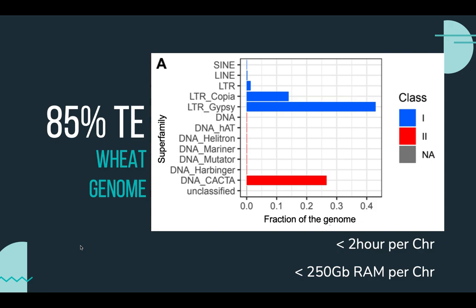This genome is important for us because it has 85% transposable elements. It traditionally requires a month to annotate, representing a bottleneck in the annotation process and subsequent analyses. With our software,